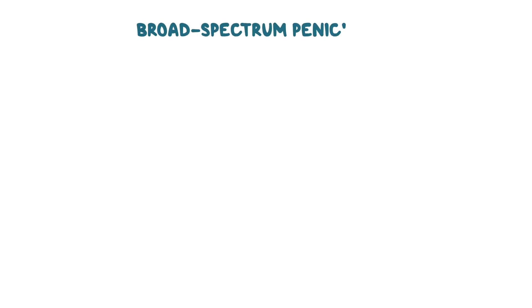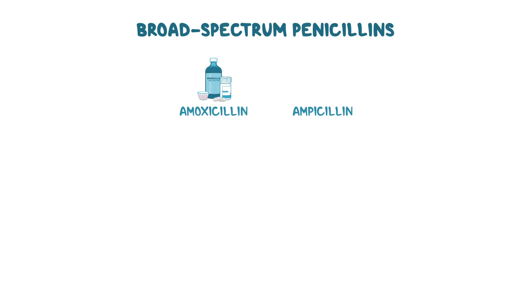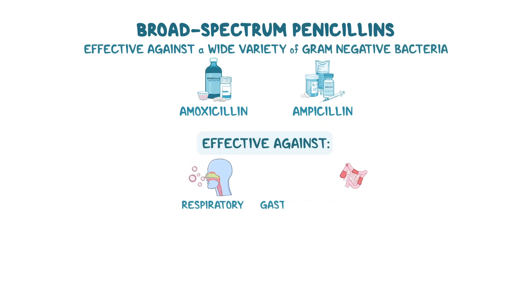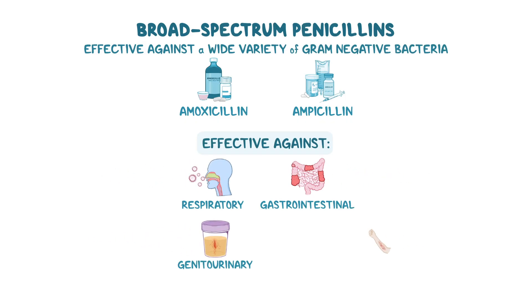Broad-spectrum penicillins include amoxicillin, which is given orally, and ampicillin, which is administered orally, intramuscularly, or intravenously. They're effective against a wide variety of gram-negative bacteria, so they're useful to treat respiratory, gastrointestinal, genitourinary, and skin infections.